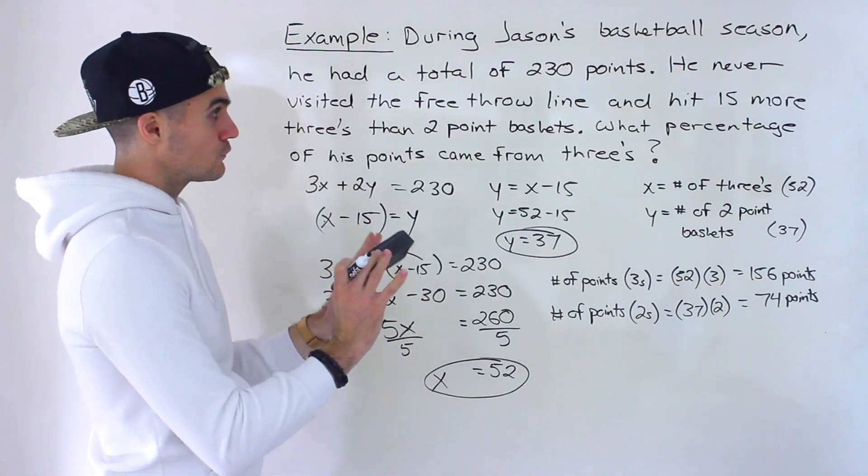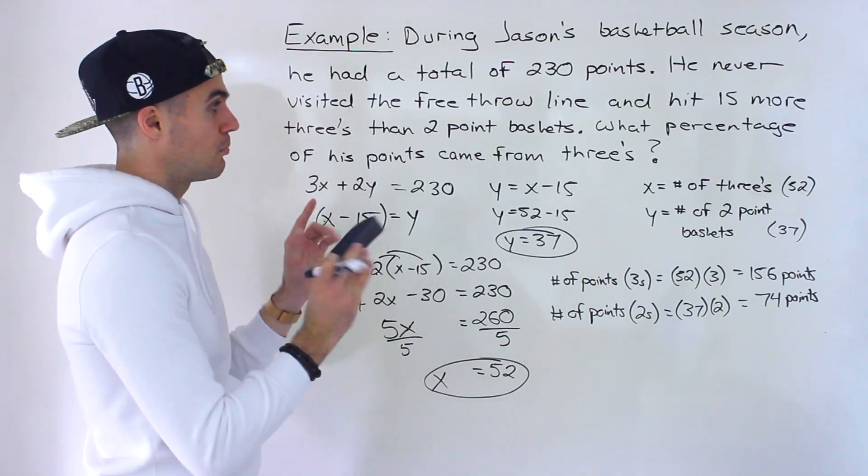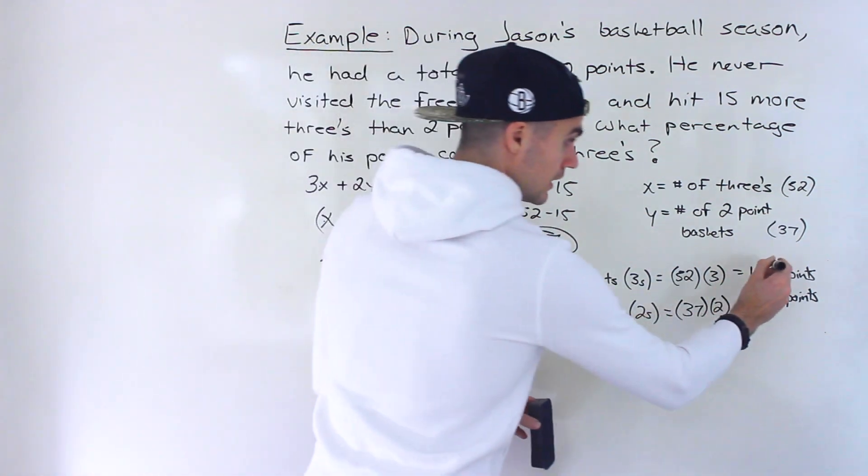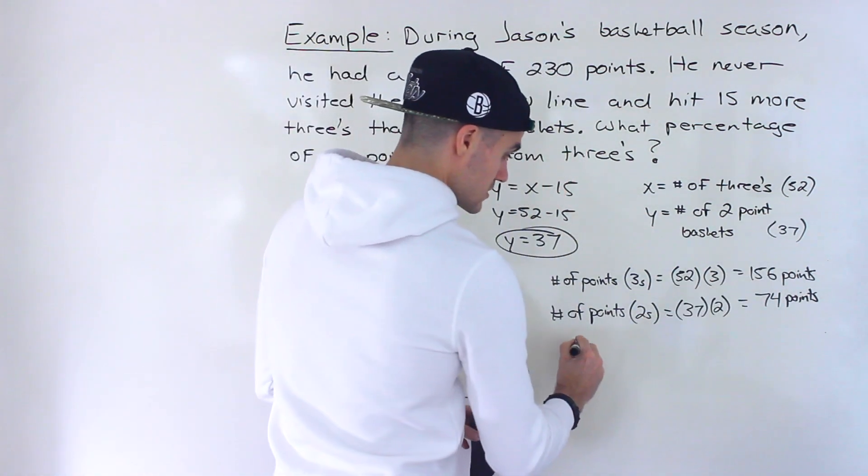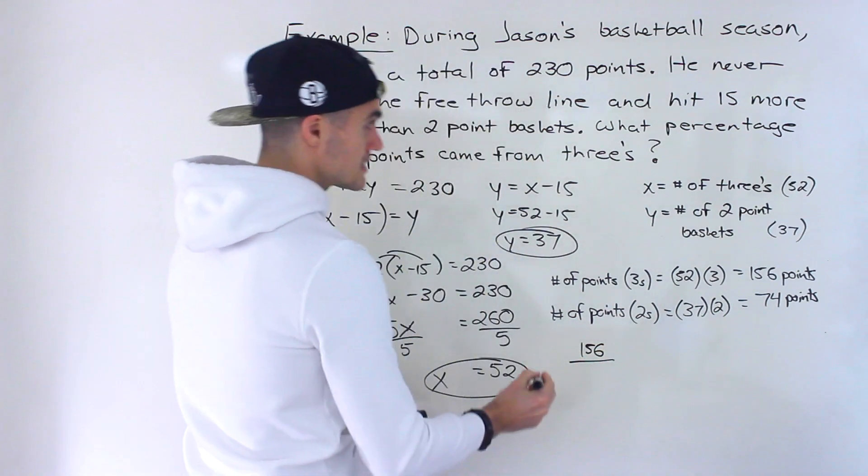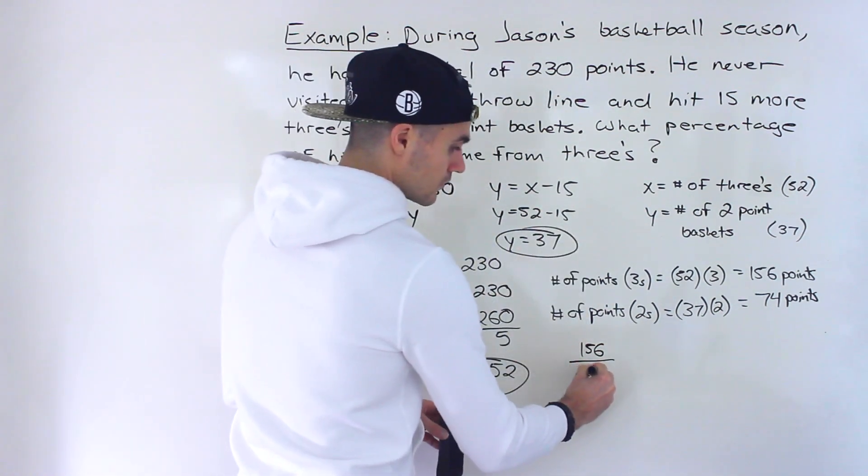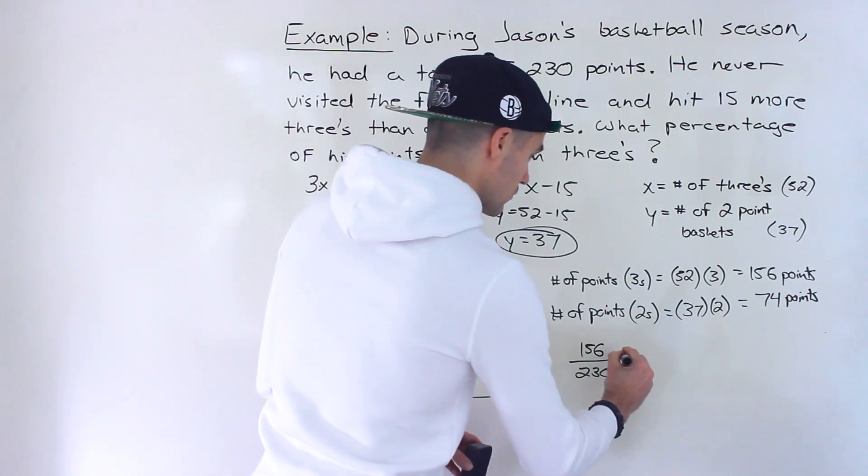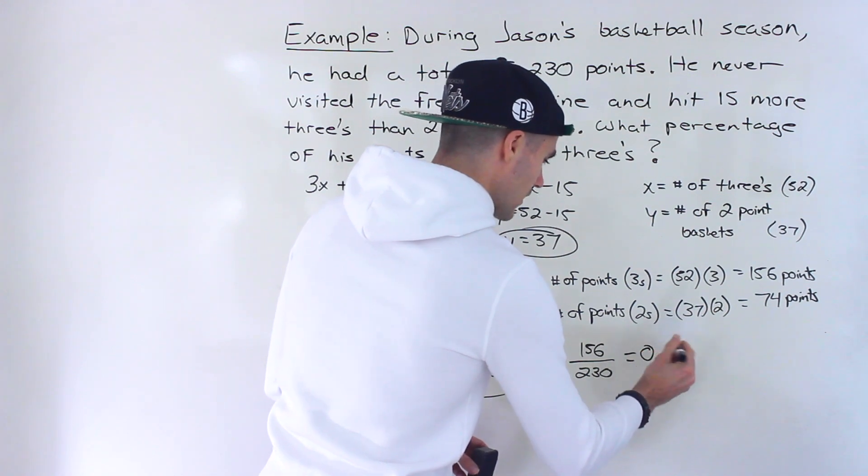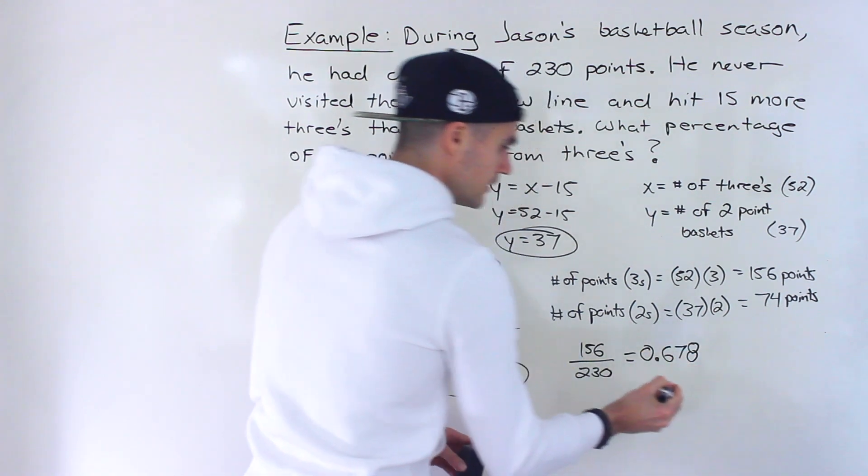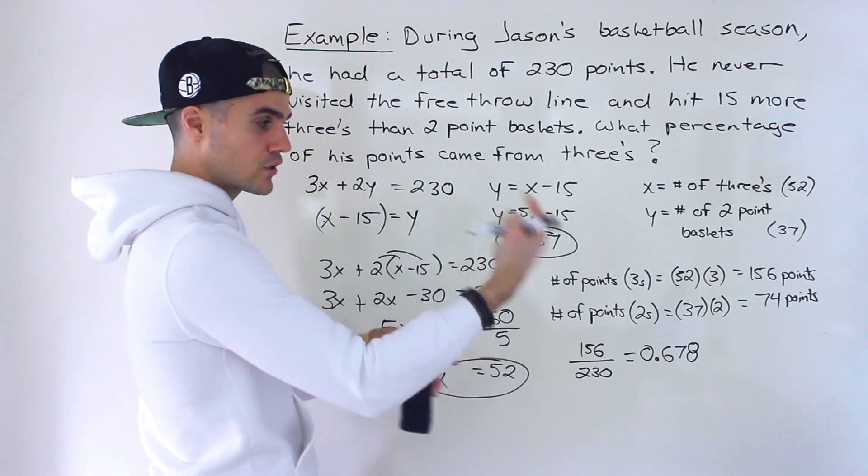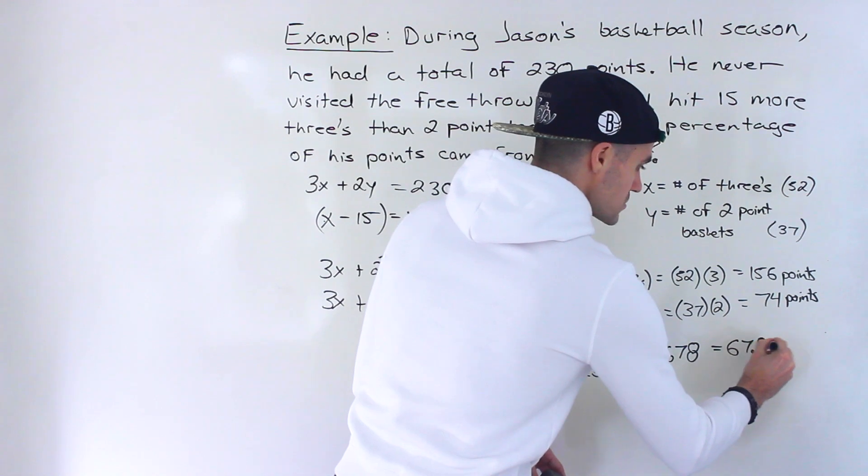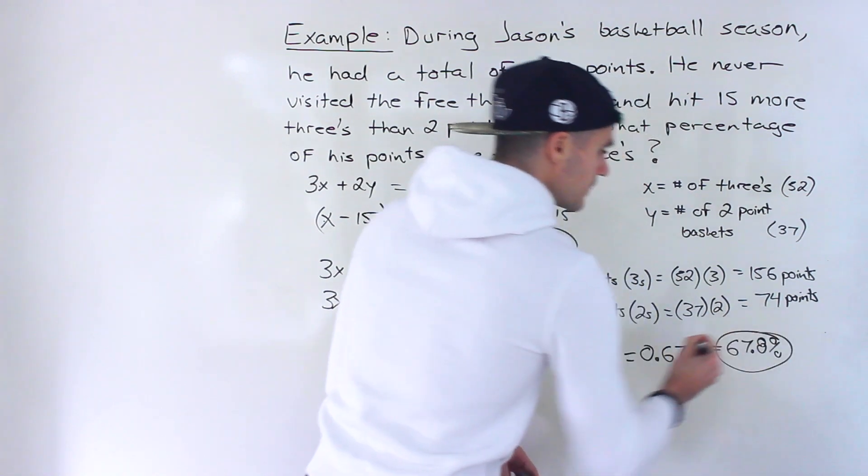But be careful. What are they asking for? What percentage of these points came from threes? So what we would do is we would take the points from threes, which is 156, and divide it by the total. That's how you would get the percentage. 156 divided by 230 would give you approximately 0.678. That's in decimals. If you want to convert it to percentages, multiply it by 100. 67.8% of his points came from threes.